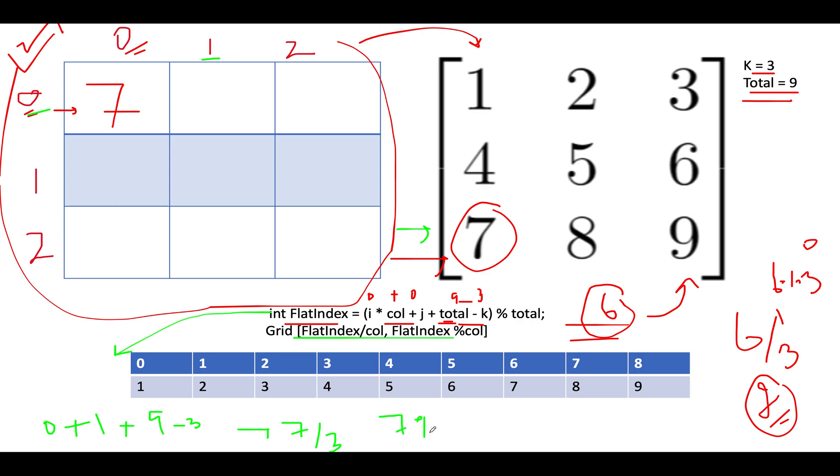And which column shall we check out? 7 modulus 3. This gives you 1. That means we should look out for this particular element. As a result of which 8 comes over here. 2, 1 corresponds to 8. We add 8 over here.